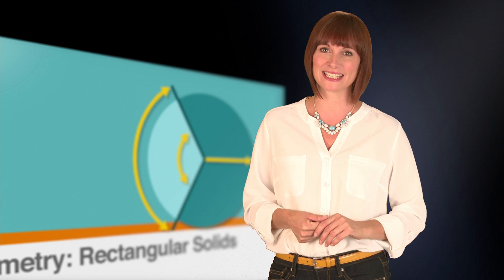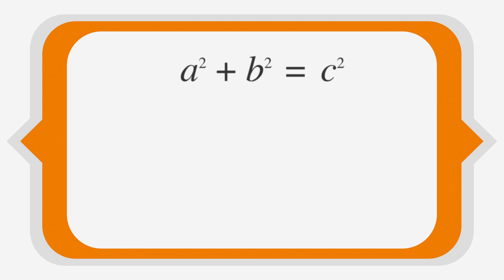Let's take a look at how that plays out. Start with the Pythagorean Theorem, a squared plus b squared equals c squared. Then write it in three dimensions, a squared plus b squared plus c squared equals d squared.